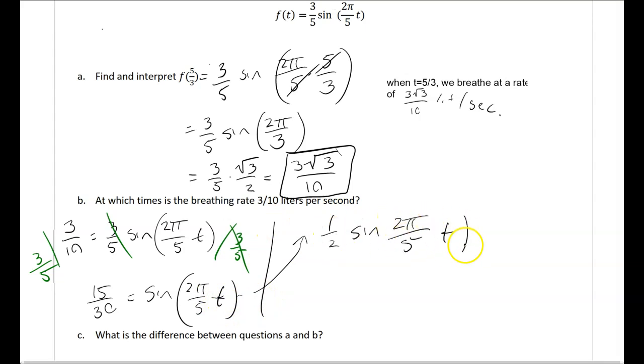So first of all, I'm just going to simplify. And if this is my equation and I'm trying to get to t, the next outermost operation is sine. I need to do the opposite, which we know is called sine inverse. So I do that to both sides. And on the right, my sine cancel out. So I'm going to be like sine inverse of 1 half equals 2 pi over 5 t.